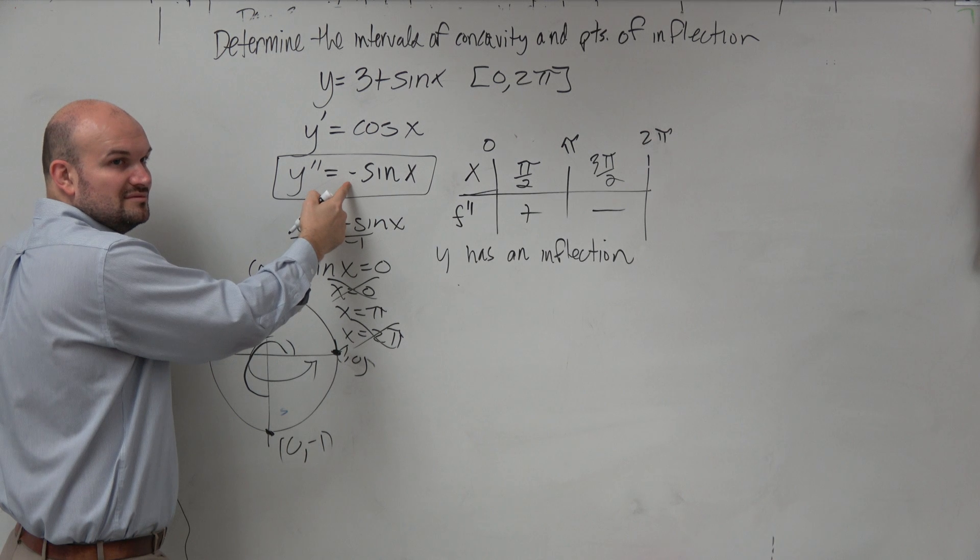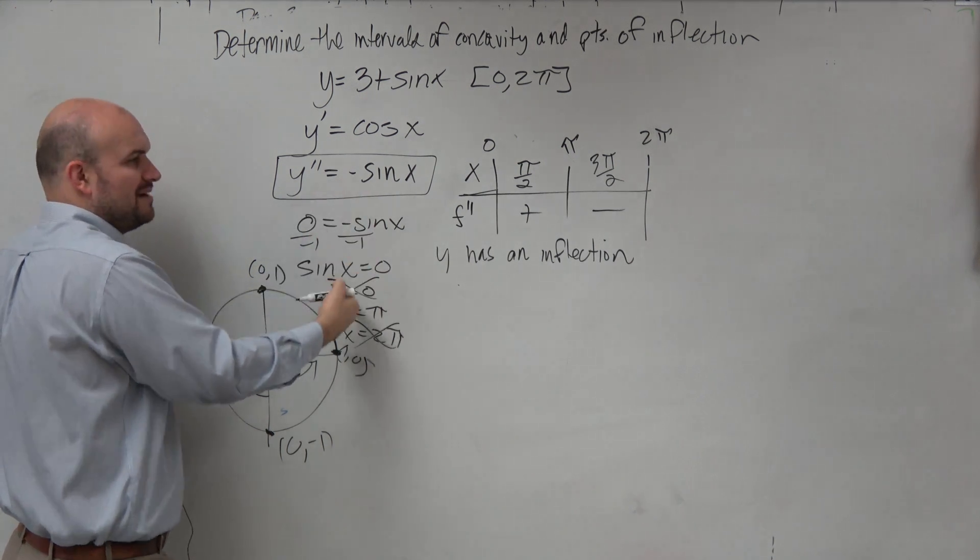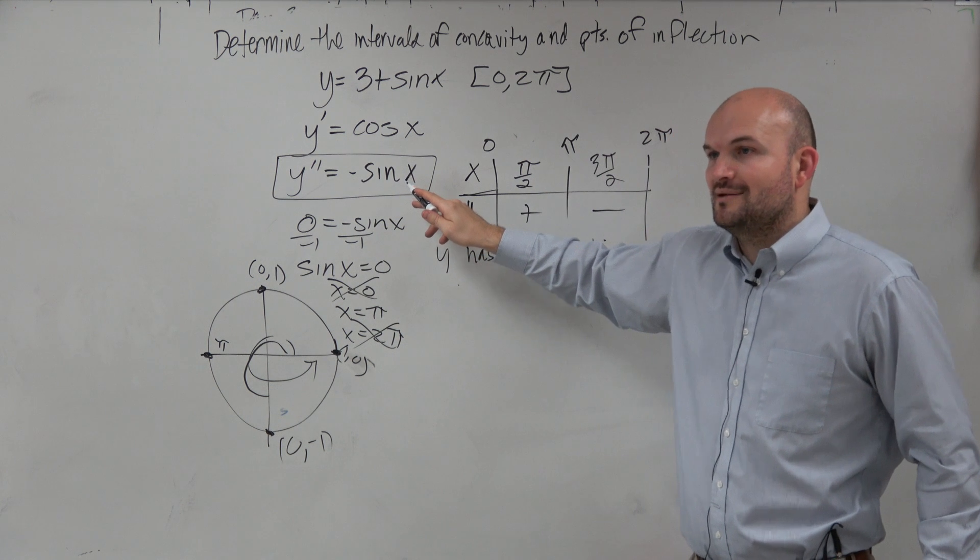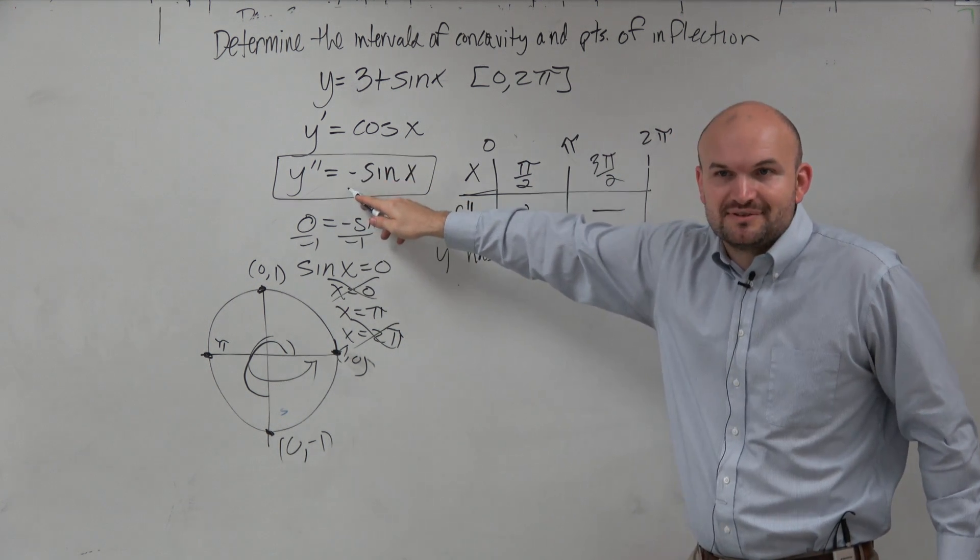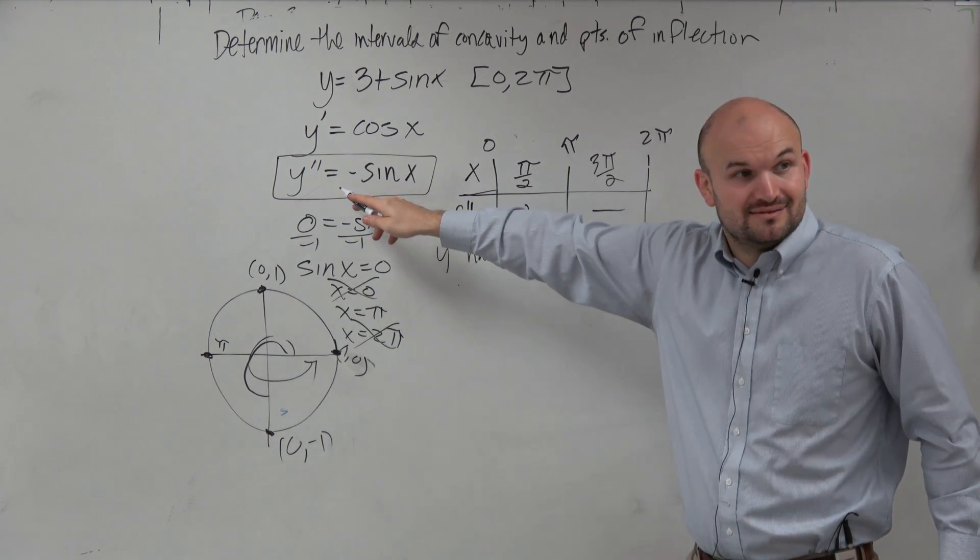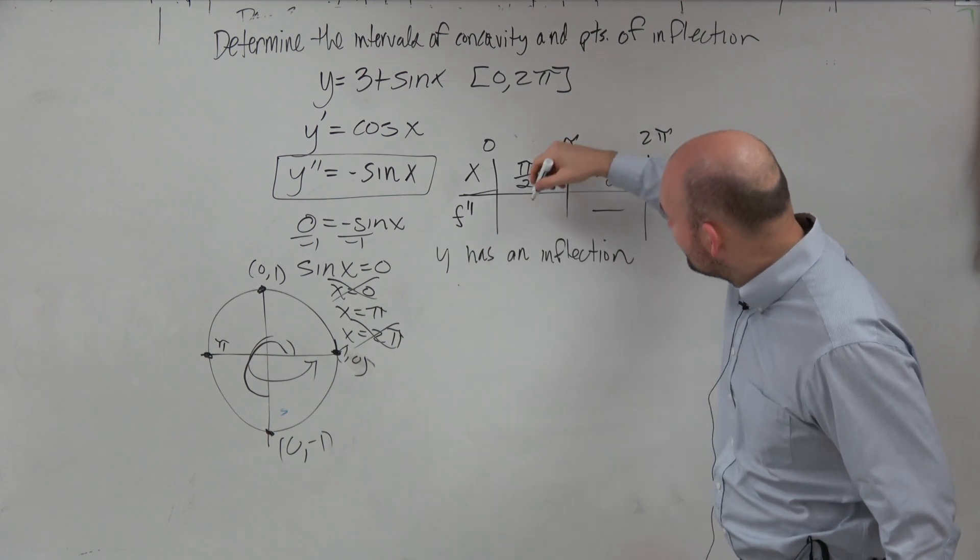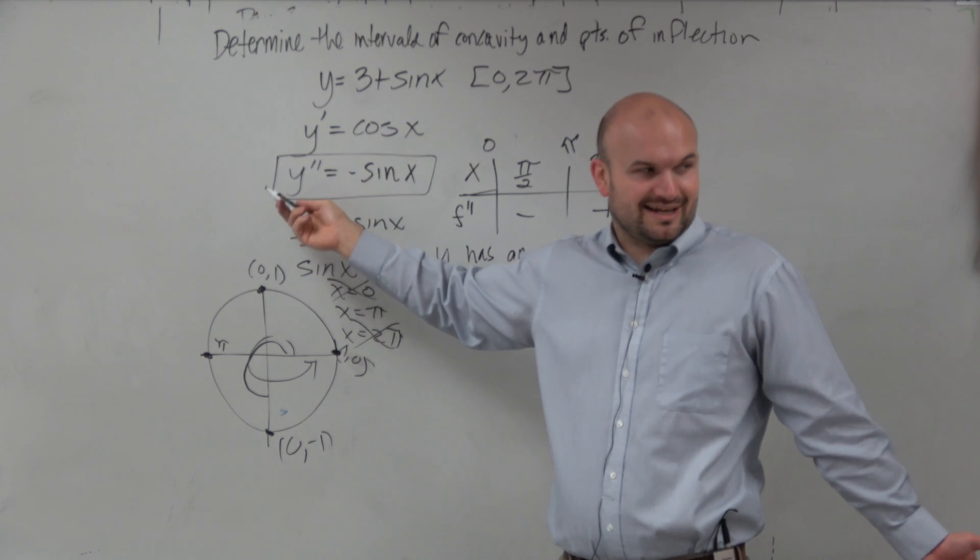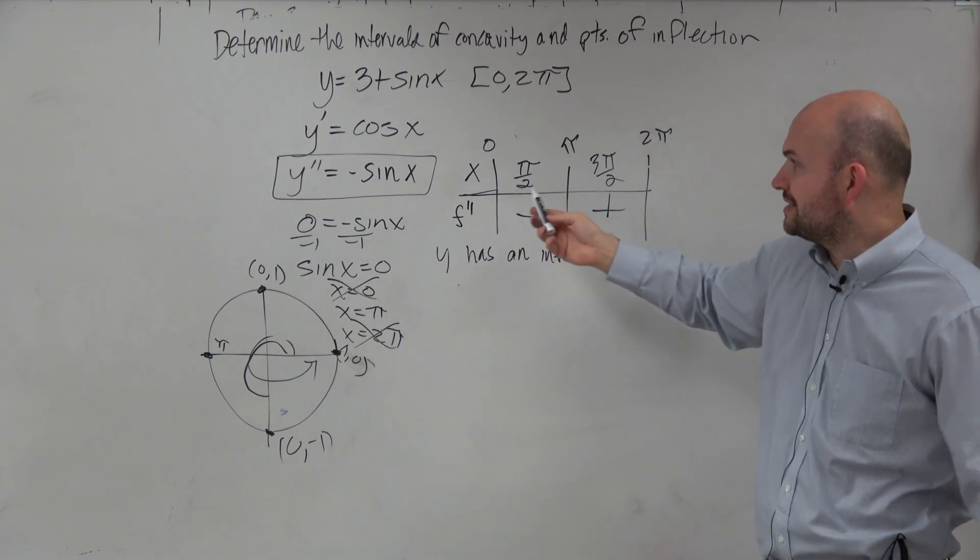We've got to be careful. What is this function? It's negative, right? I made my mistake. When you plug in pi halves, you get positive 1, right? But then you have to multiply it by a negative. Correct?